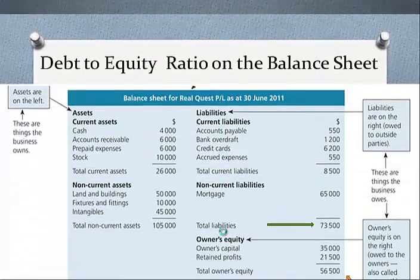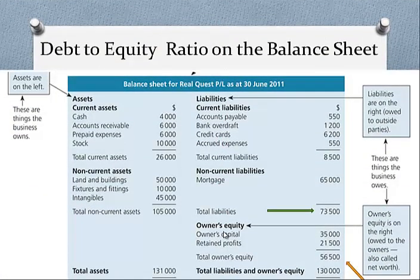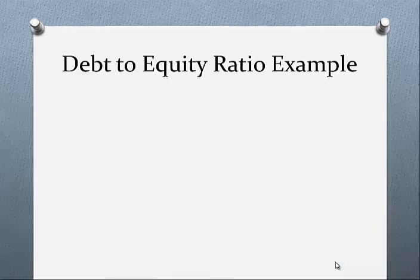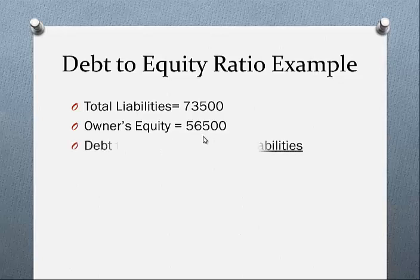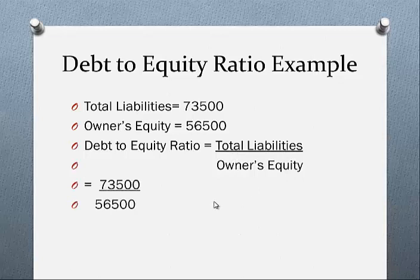Now let's turn to the balance sheet to see where those figures come from. Total liabilities: 73,500; total owner's equity: 130,000. Plugging that into the formula — total liabilities over owner's equity — gives us a ratio of 56.5%.